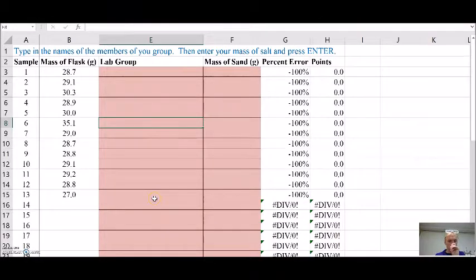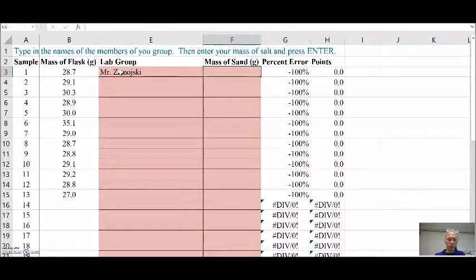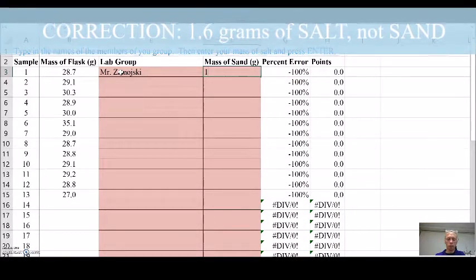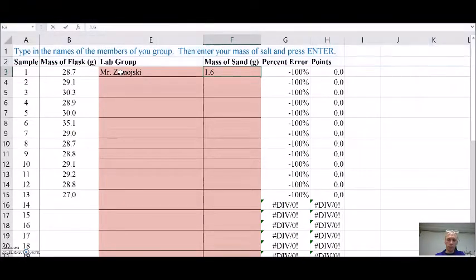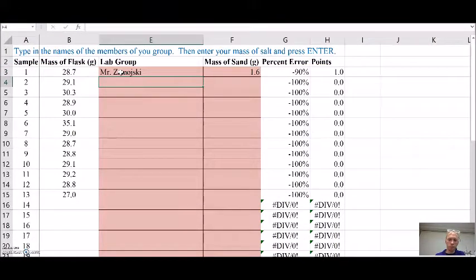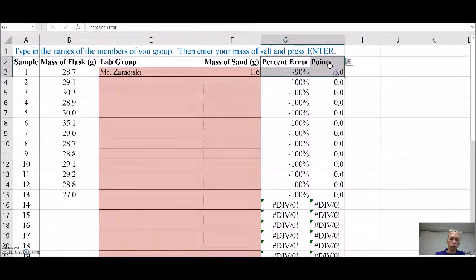I have a spreadsheet here. We're going to put in your lab group. So Mr. Zamoyski and for my calculation, I ended up getting 1.6 grams of sand after doing all my separation processes. And when I press enter, it's going to tell me how I did. Ooh, that's pretty bad. I have a percent error of 90, which only gives me one out of 10 points. So I definitely want to do this one again.